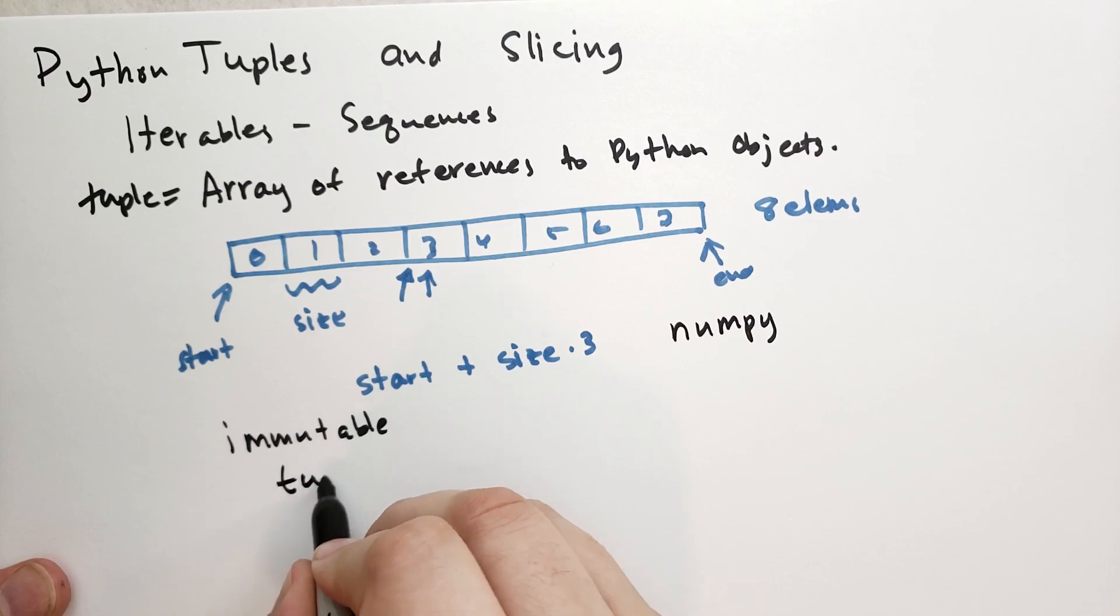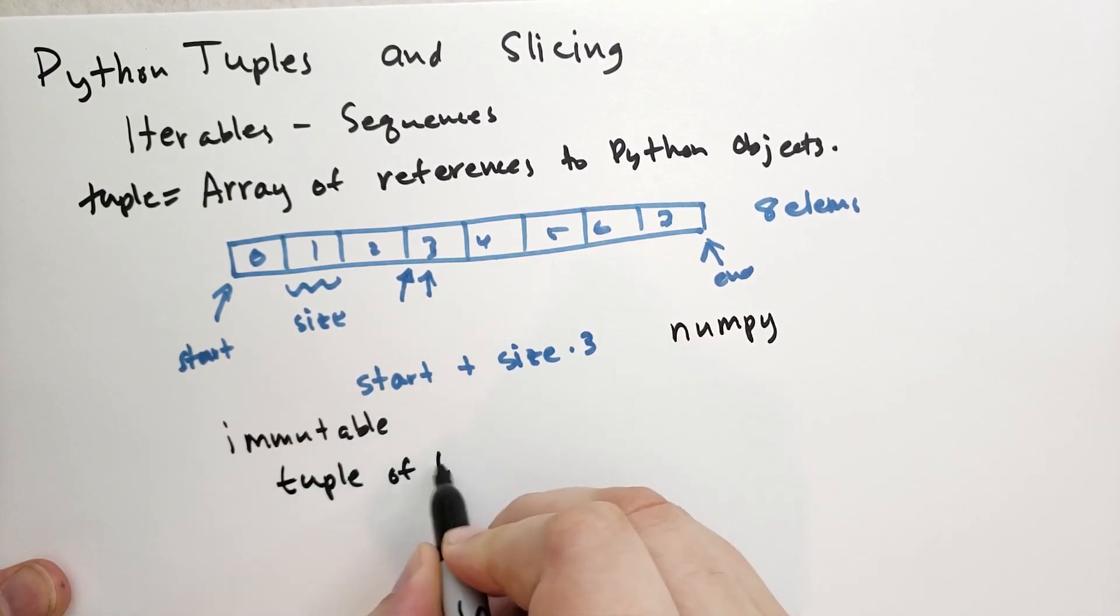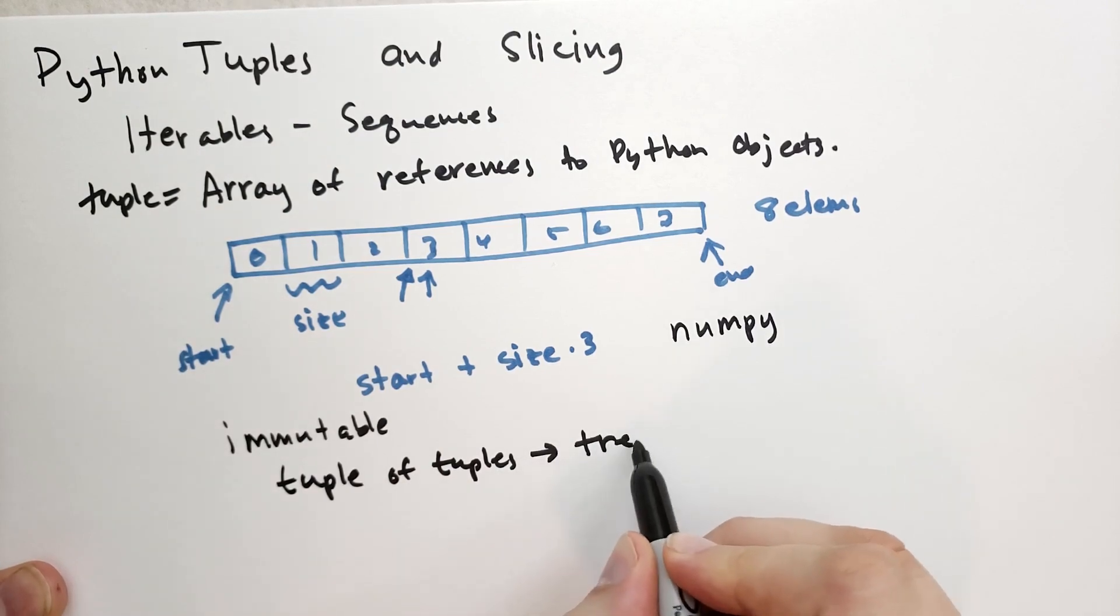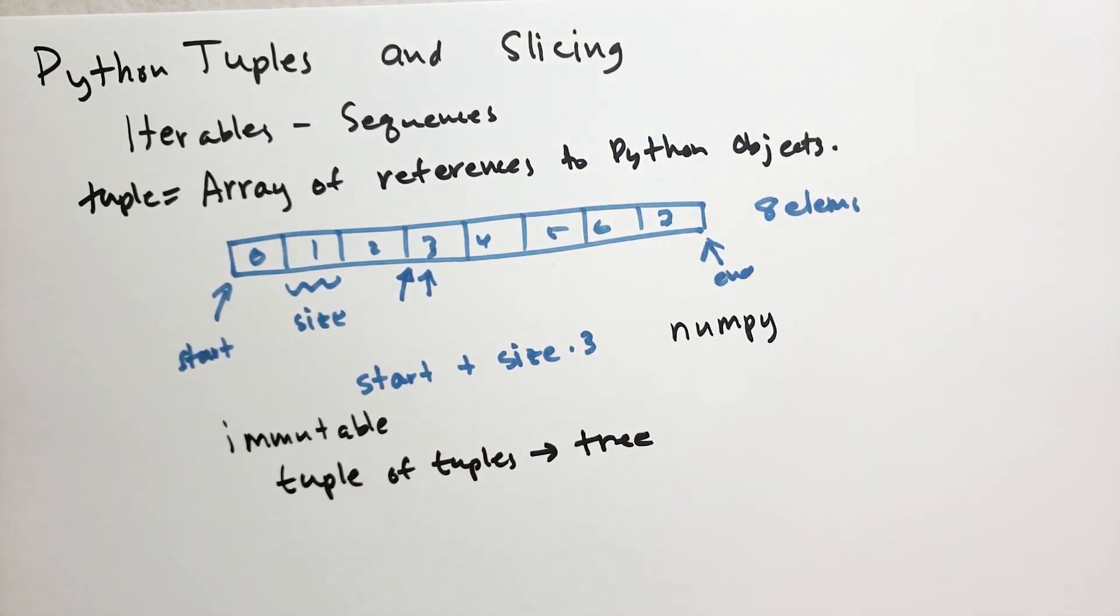And when we cover a tuple of tuples, because a tuple is a Python object, that's going to give us the tree data structure that we've hinted at so many times that we're going to cover later.